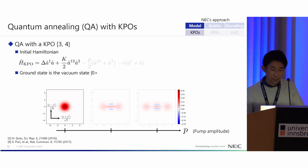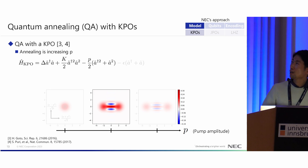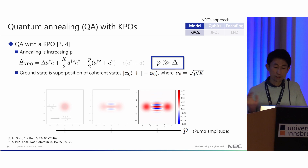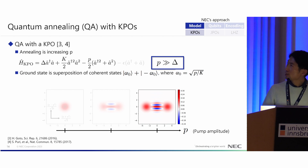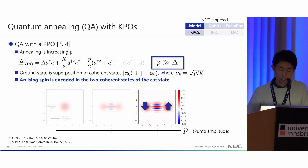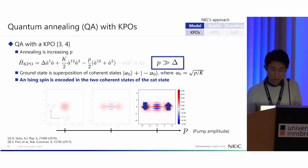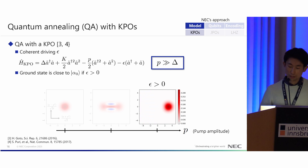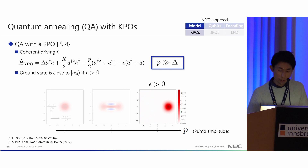This is the basic scenario. When we execute quantum annealing, we gradually change some parameters. In QA with KPO, we gradually increase pump amplitude p from 0 to some finite value. The initial Hamiltonian has a ground state that is the vacuum state, described by a Wigner function. As we gradually increase the pump, the state is squeezed, and when the pump is much larger than delta, we obtain a superposition of coherent states — alpha_0 plus minus alpha_0 — the cat state.